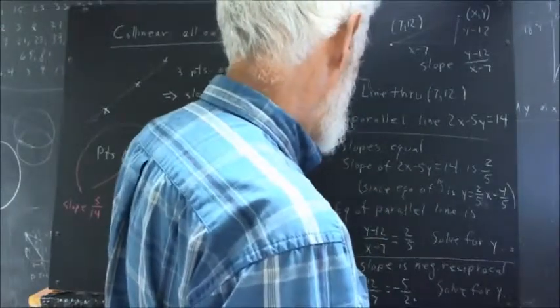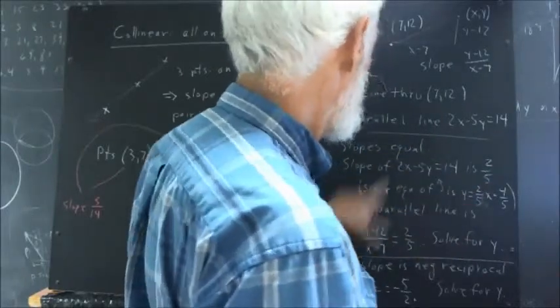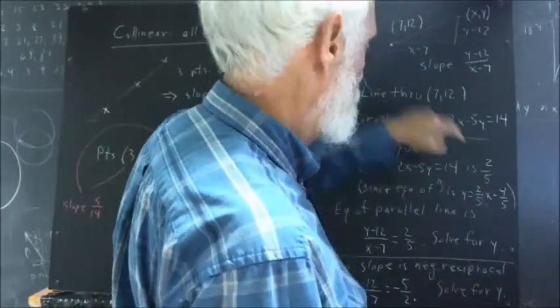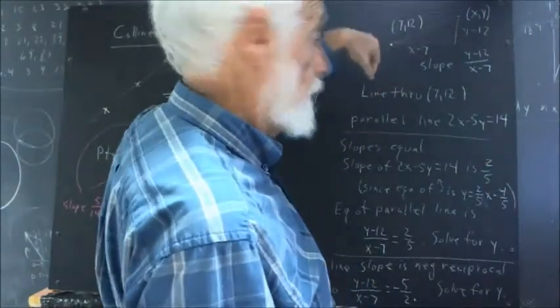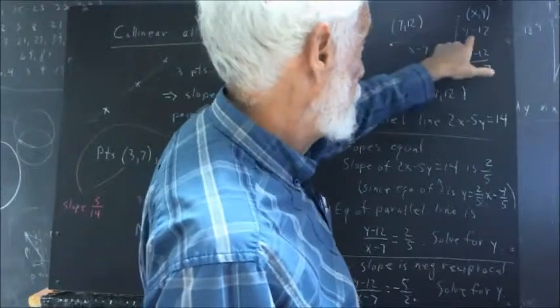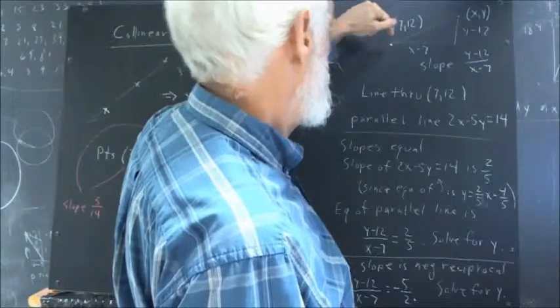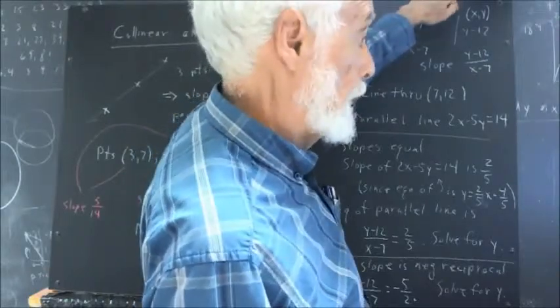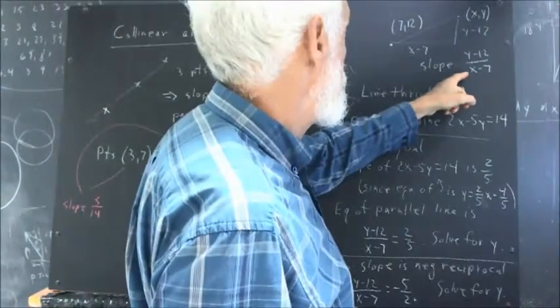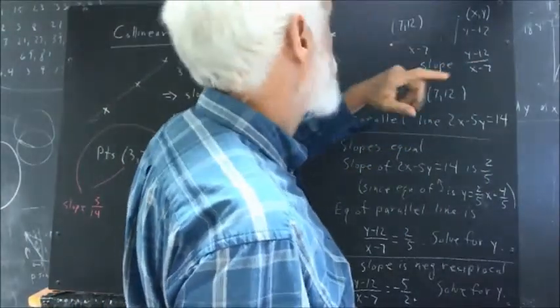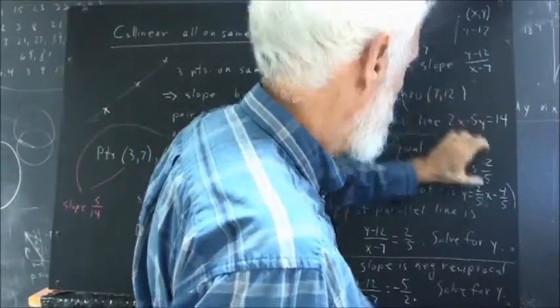Then we want the equation of the line parallel to that through the point 7,12. So we want a line of slope two-fifths through the point 7,12. We do our fundamental triangle. Very easy to do. We can have the rise y minus 12, x minus 7, the fundamental triangle for 7,12 and point x,y. We know, then, that this slope, that if this line is to have the given slope, then this expression for the slope has to equal this.